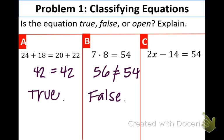And the last one. It involves a variable. So what kind of equation is that? That's an open sentence. You can write the word open. And the reason why? Because there is a variable.